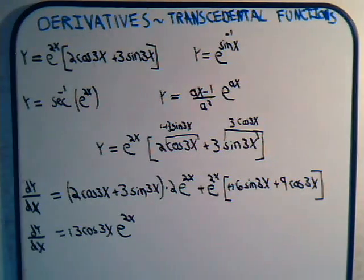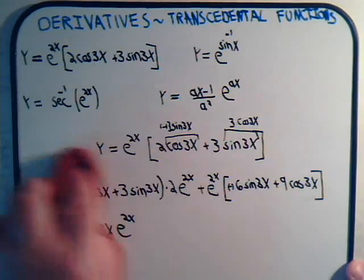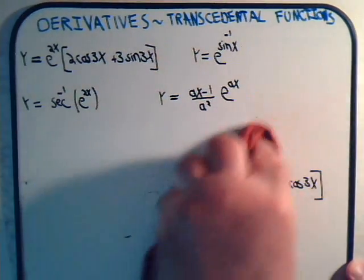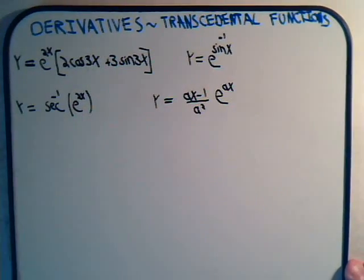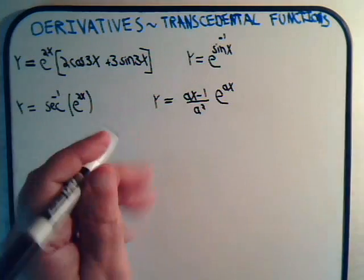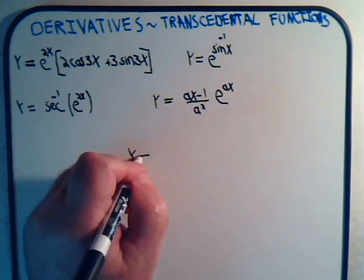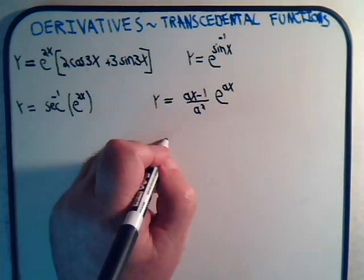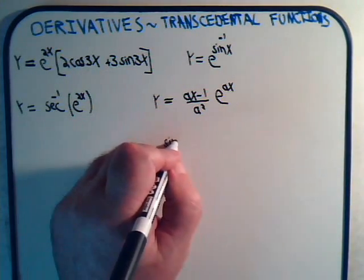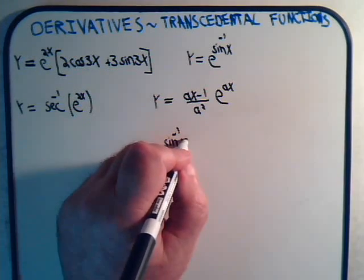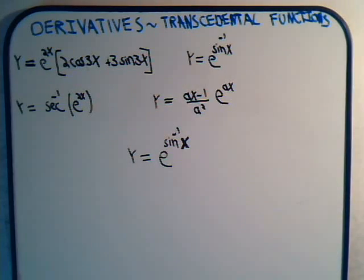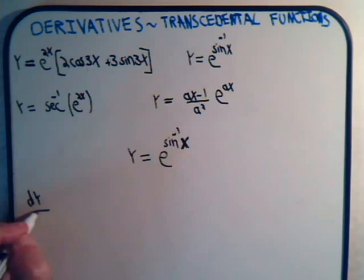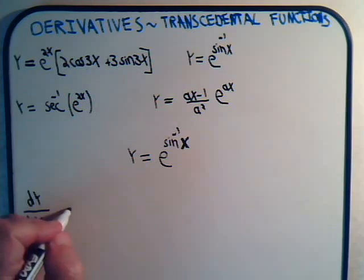The second problem is y equals e to the inverse sine of x — a rather unusual looking function. We have y equals e raised to the power of the inverse sine of x. If you were asked this on a test, how would you find dy/dx? The answer is it's just what you've been doing all along — nothing different. It equals e to this power times the derivative of this exponent.